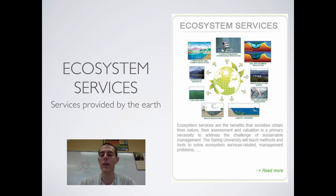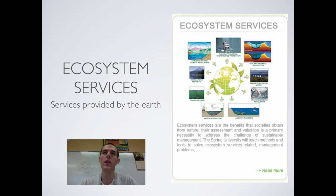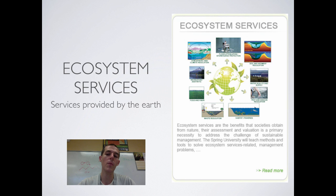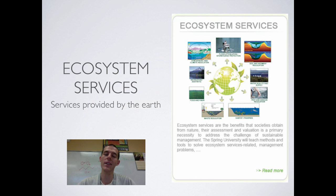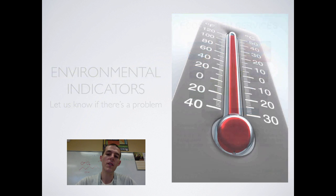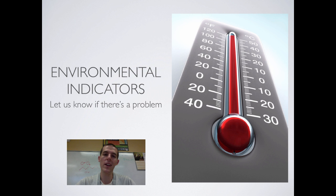Ecosystem service is something we're going to circle back on quite a lot throughout the course of the year. Basically, ecosystem services are things that the Earth provides for us — usually things that we could not do for ourselves. This includes things like filtering the air, pollinating our plants, growing crops, providing building materials, and filtering water. These are things that humans might be able to do for ourselves, but for the most part, if we were to do them, it would be entirely too expensive. We can't build a giant filter to filter all of the air in the world.